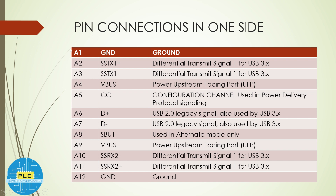For the pin connections on the A-side (top side): A1 and A12 are ground. A2 is Transmitter 1 plus (TX1+), and A3 is Transmitter 1 minus (TX1-). A4 is V-Bus — the output voltage. A5 is the CC Configuration Channel, used in the power delivery protocol for signaling.